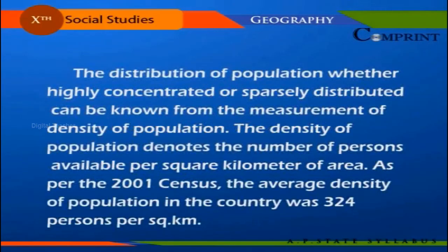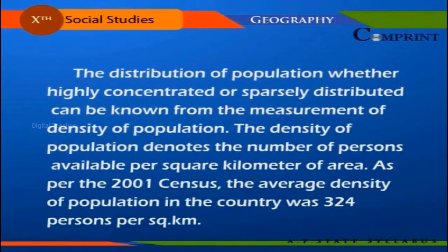The distribution of population, whether highly concentrated or sparsely distributed, can be known from the measurement of density of population. Density of population denotes the number of persons per square kilometer of area. As per the 2001 census, the average density of population in the country was 324 persons per square kilometer.